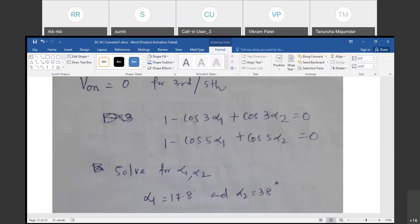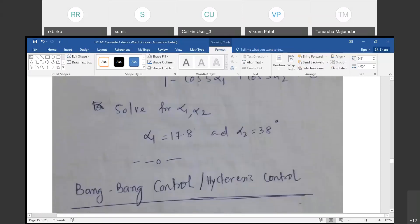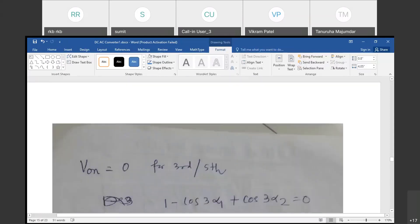You cannot solve simply because you have to put one value and then solve it iteratively. After solution, you will find that α1 is 17.8° and α2 is 38°.